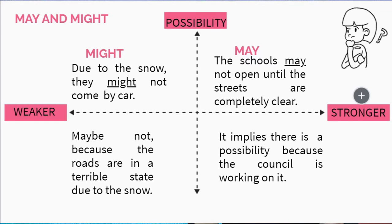English is very tricky and we should analyze some nuances about the way to express possibility. As you can see in the diagram, 'may' is used with stronger possibilities and 'might' expresses weaker ones. For example, 'Schools might be able to open after the winter snow' means it's not likely to happen. But 'Schools may open after the winter storm' means that probably the council is working on it and they will be able to open. So it's just a slight difference, but sometimes it's interesting to know.